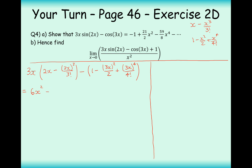Expanding the brackets: 3x times 2x gives 6x², and 3x times -2x³/3! gives -8x⁴/6, which simplifies to -4x⁴. Minus the cos(3x) expansion gives -1 plus 9x²/2 minus 81x⁴/24, which is 27/8·x⁴. Tidying up: the constant is -1. For x²: 6x² + 9/2·x² = 12/2 + 9/2 = 21/2·x². For x⁴: -4 - 27/8 = -32/8 - 27/8 = -59/8·x⁴. So we get -1 + 21/2·x² - 59/8·x⁴.